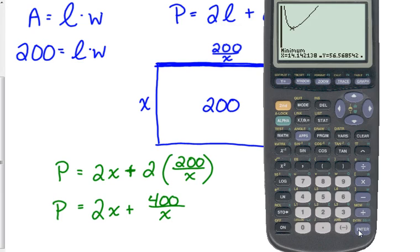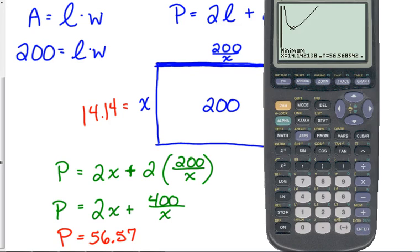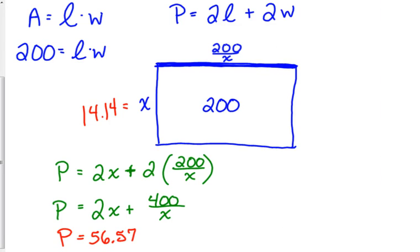Now, be careful. It gives us an X value and a Y value. The X value is what in this problem? I know it's 14, but what does it represent? The length of the side. So that's 14.14. What does the Y value represent? Yeah, it's 56, but what does that represent? The perimeter. The perimeter, the minimum perimeter for this figure is 56.56, and that side length is 14.14.